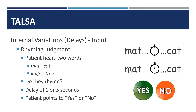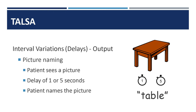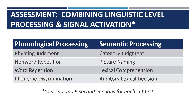Here is the same rhyming judgment test we looked at before. This subtest is given under two conditions: one in which there is a one-second delay between the presentation of the two words, and one in which there is a five-second delay. If the patient does better in the one-second condition, we know that they are likely to have a problem with signal duration. If they do better with the five-second delay, they are likely to have a problem with signal strength. Picture naming is another subtest that makes use of the one and five-second delay conditions. In fact, all of the subtests that we've mentioned so far have one-second and five-second variations.